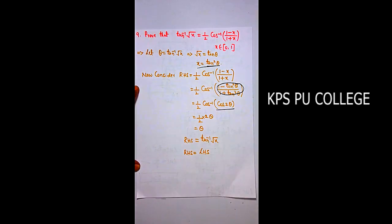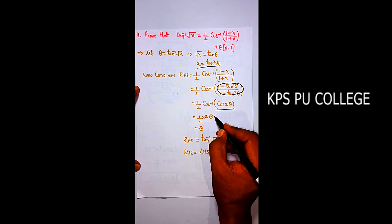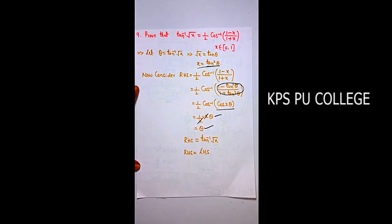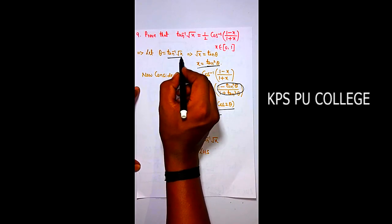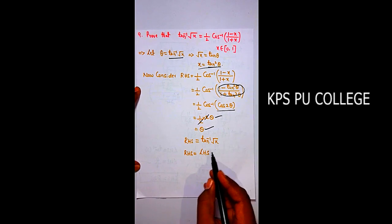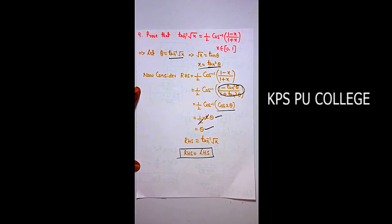cos⁻¹ and cos cancel, leaving ½ · 2θ, and 2 and 2 cancel, leaving θ. Since we defined θ = tan⁻¹(√x), RHS equals θ = tan⁻¹(√x), which equals LHS. This proves the required result.